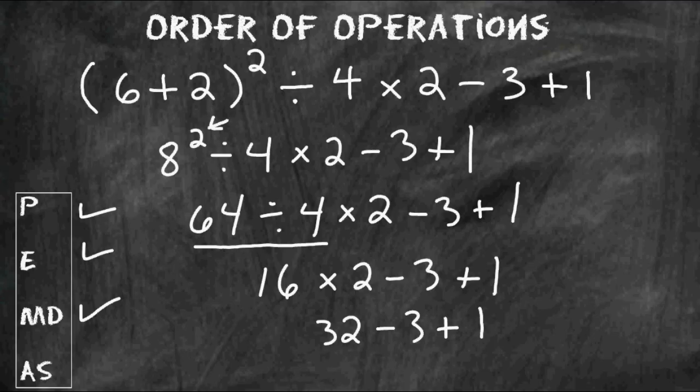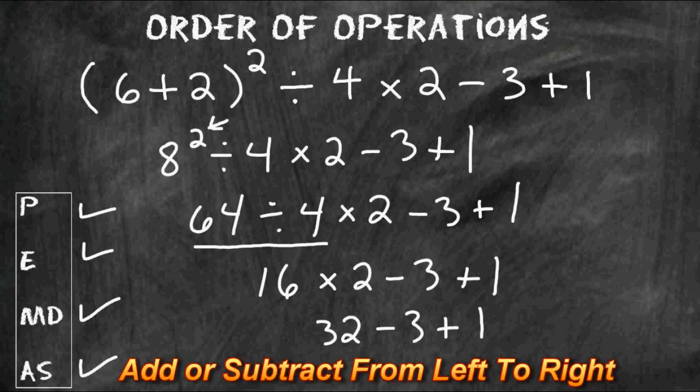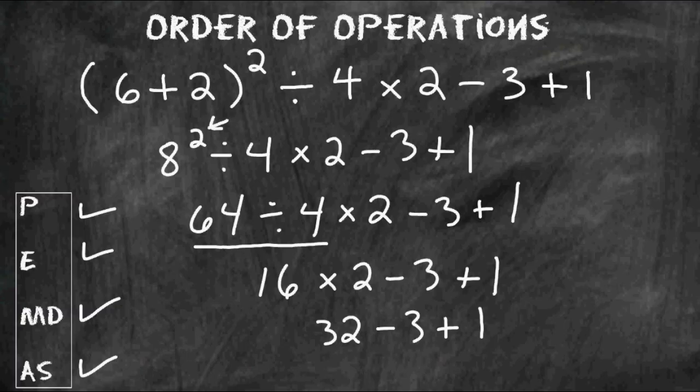The last step to the order of operations is to add and subtract. When all you have remaining are subtraction and addition signs, you have to solve in order from left to right. 32 minus 3 is 29, and then 29 plus 1 is 30. So the answer to this math expression is 30.